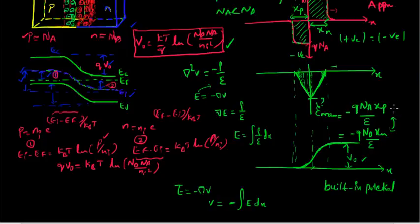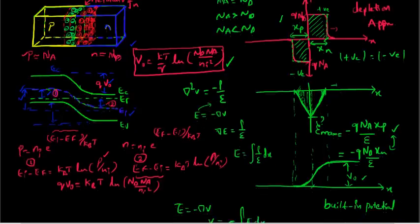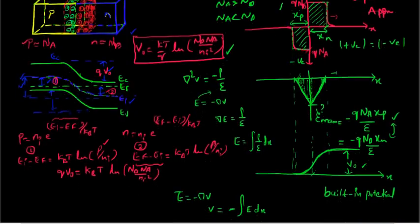To summarize the key results: E_max equals minus Q·NA·XP over epsilon; the charge neutrality condition gives Q·NA·XP equals Q·ND·XN; and V₀ equals (KT/Q) ln(ND·NA / NI squared) is the built-in potential. Based on these equations, we will calculate the junction width — the depletion width — in the next video, which is a very important calculation.